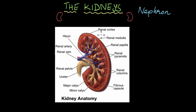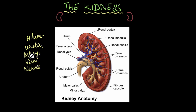We'll talk more about the function of the nephron and the different parts involved in later videos. First, we'll start with the anatomy of the kidney, and we're starting right here at a region known as the hilum. This hilum can be thought of as a gateway or an arch through which a lot of tubes enter and exit the kidneys.